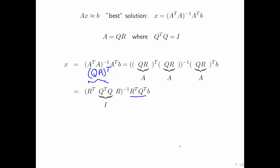But now what we notice is that we get Q transpose Q. But Q transpose Q is the identity. So we get this.